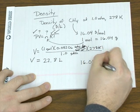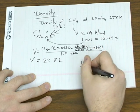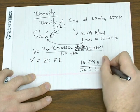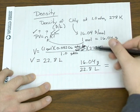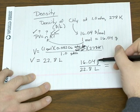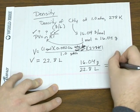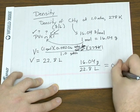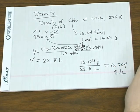So now we've got the mass of one mole of gas and the volume of that amount. So 16.04 grams in a volume of 22.8 liters gives you a density of 0.704 grams per liter.